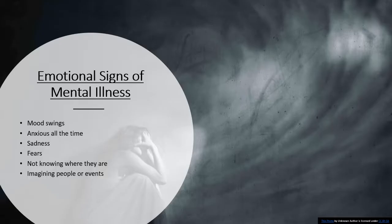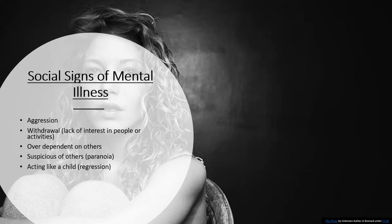The emotional signs of mental illness include mood swings, being anxious all the time, experiencing sadness, and being fearful. The person may not know where they are, and may imagine people or events. The social signs of mental illness are aggression, withdrawal, or lack of interest in people or activities, being over-dependent on others, being very suspicious of others — what we call paranoia — and acting childlike.